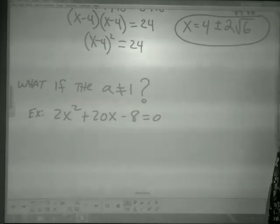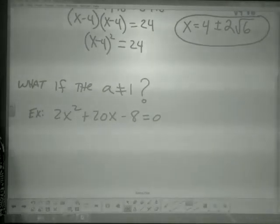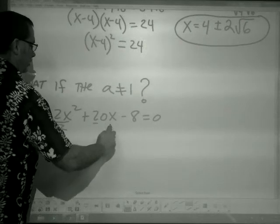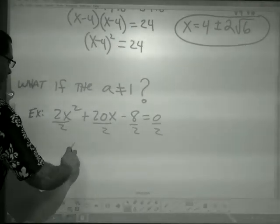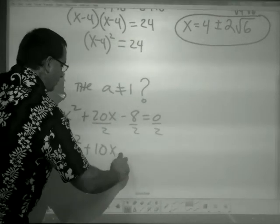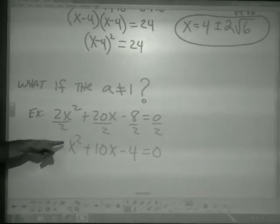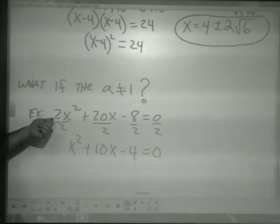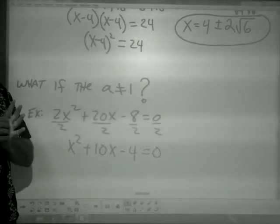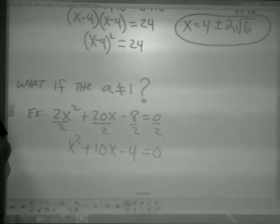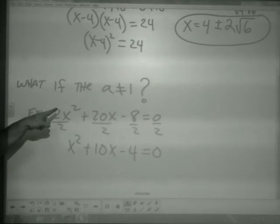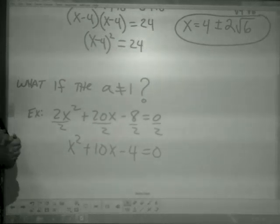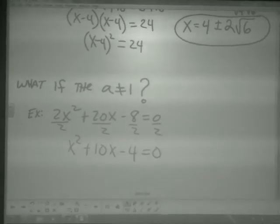What if it's not a 1? Look for a GCF. For example, if there's a common factor of 2, divide everything by 2 so that you now have x² + 10x - 4 = 0 with a leading coefficient of 1, and then go through completing the square. If everything is not divisible evenly, completing the square may not be the best choice — there are other methods coming up. But if you can divide out cleanly, go ahead and finish it by completing the square.